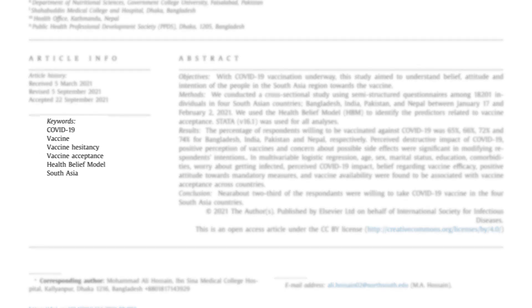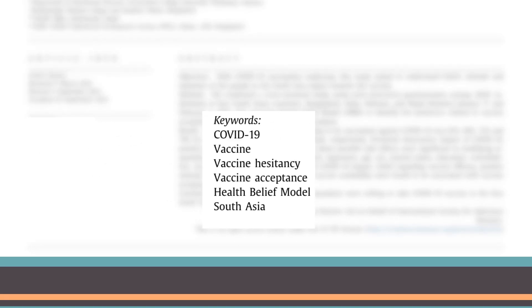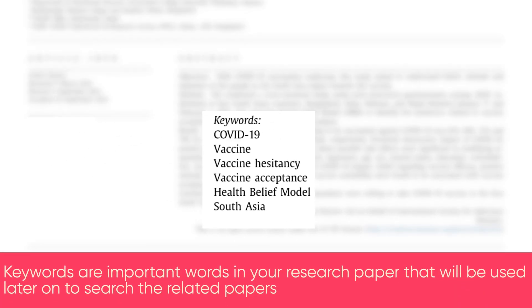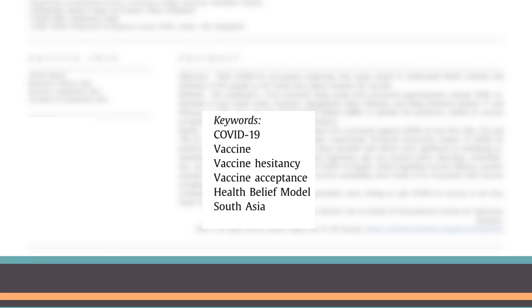After the abstract, the next section is keywords. As you can see here, there are six keywords. The important thing about keywords is that in the future somebody will use those keywords to find your research article. If you do not select keywords properly, your article will not appear in search engine results, so you have to select those keywords very carefully.